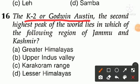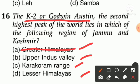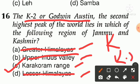Question number sixteen: K2 — also known as Godwin-Austin — is the second highest peak in the world. In which region of Jammu and Kashmir does it lie? Option A — Greater Himalayas, B — Upper Indus Valley, C — Karakoram Range, D — Lesser Himalayas. The answer is option C — K2 lies in the Karakoram Range.